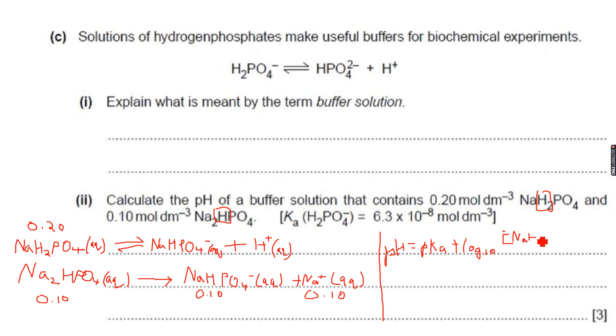This will be the A-, A- in this case is NaHPO4-, the conjugate base, the concentration of the conjugate base over the concentration of the acid which is the weak acid, which is NaH2PO4.